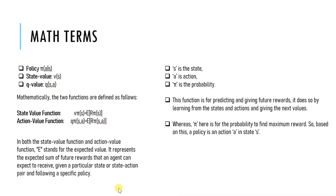The policy π(a|s) is a mathematical function that specifies the probability of taking action a in state s. It maps each state s to a probability distribution over all possible actions a. The state value function V(s) estimates the expected long-term return, or cumulative reward, starting from a given state s and following a specific policy π. It is the expected sum of future rewards discounted by the factor gamma.